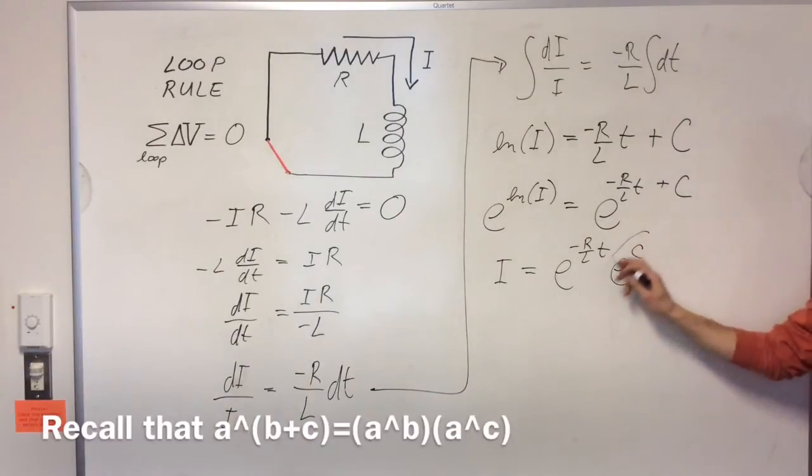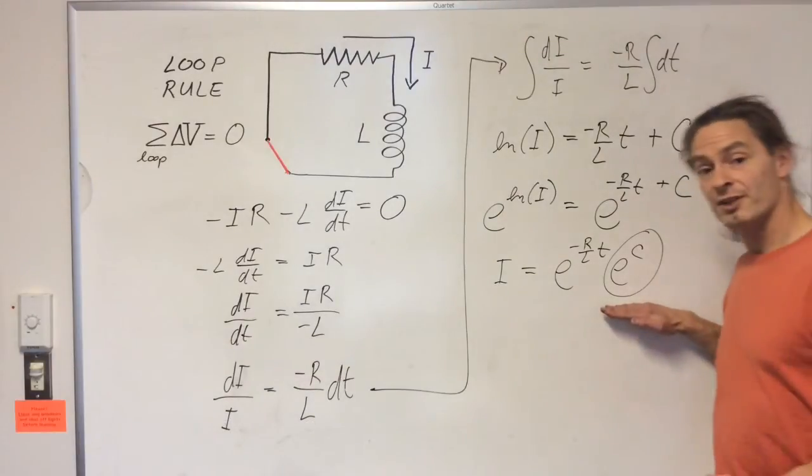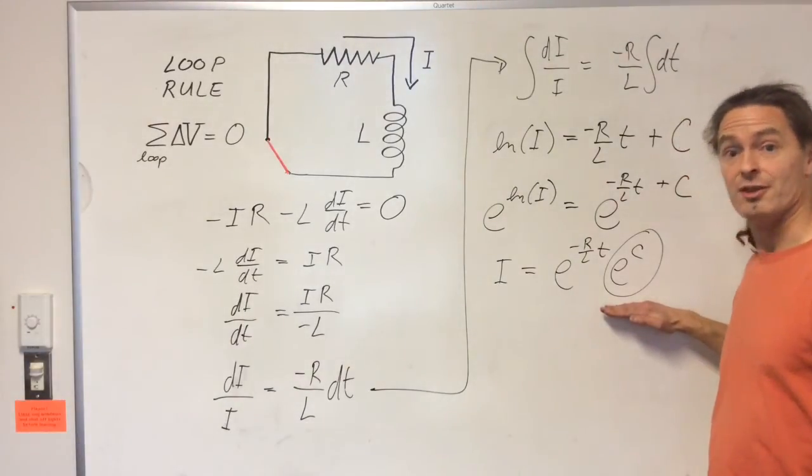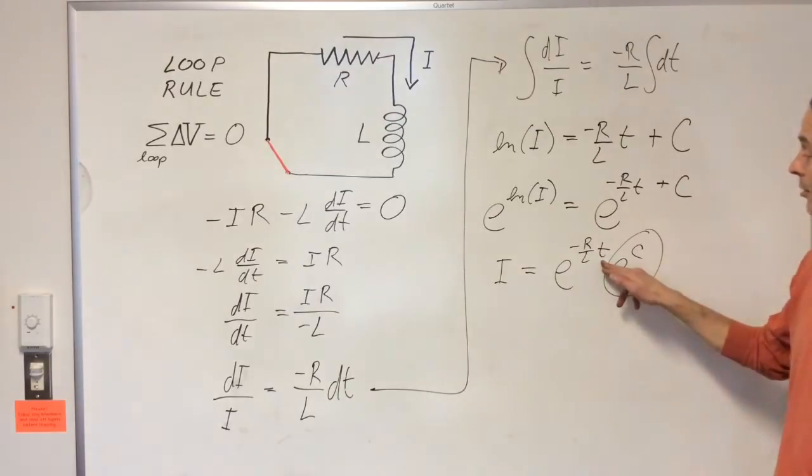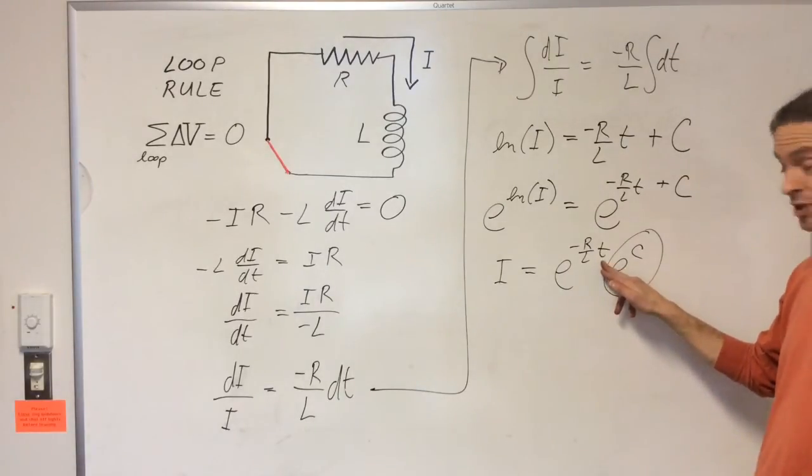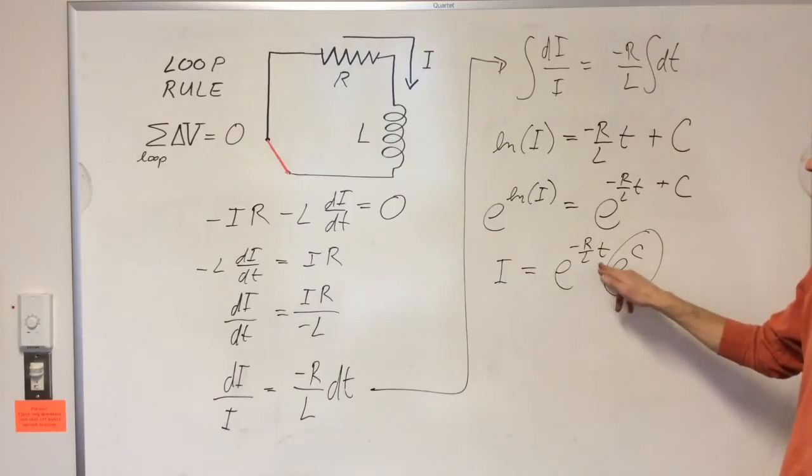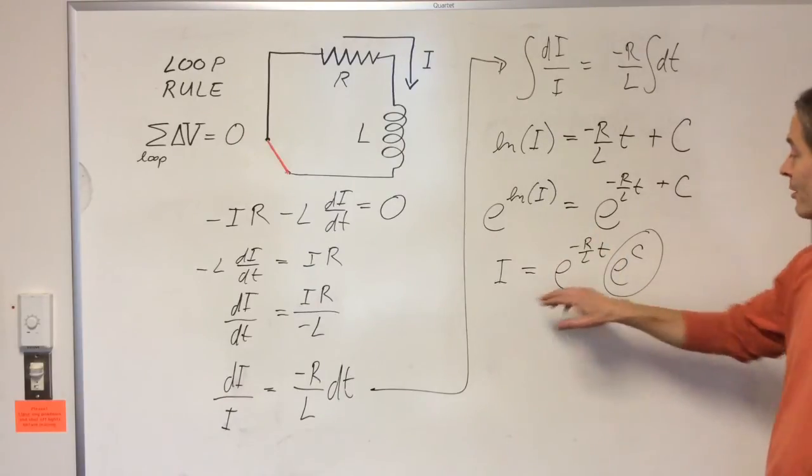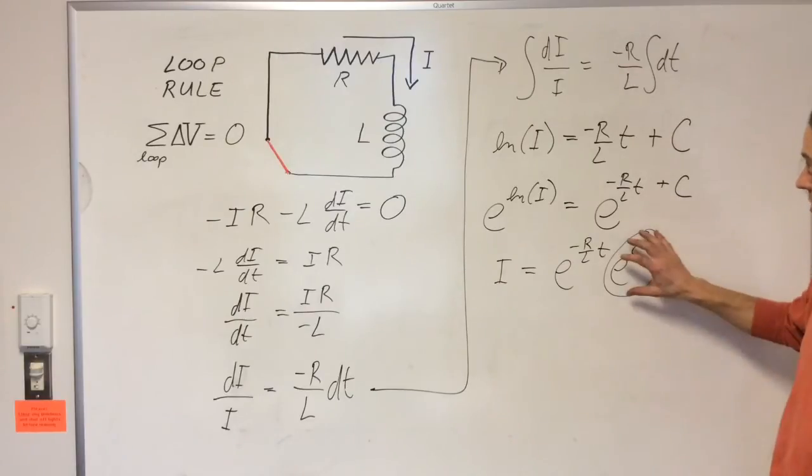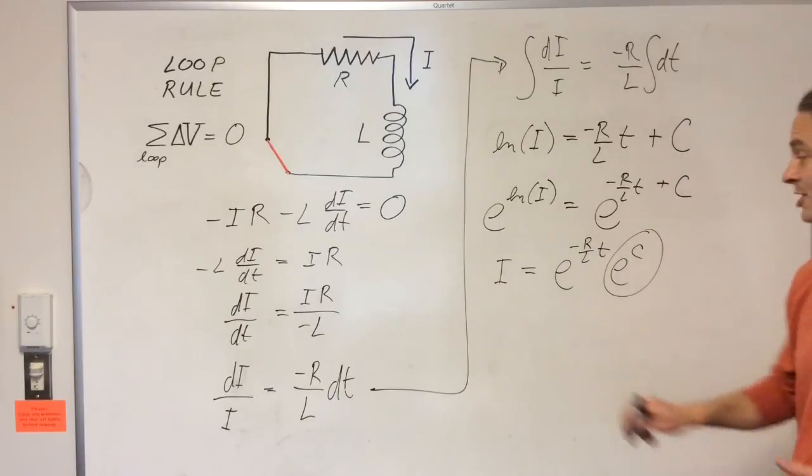But e to the c is just another constant. We can determine the value of this constant from our knowledge of the initial conditions. So if we plug in zero for t, that is the conditions at time zero, we'd have e to the zero which is one, and we'd have the current at time zero is equal to this constant here. So this constant here is simply the current at time zero.